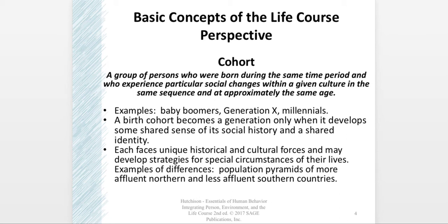There's a difference between a cohort and a generation: it becomes a generation only when it develops a shared sense of its social history and a shared identity. Generally when we talk about generations we're thinking in terms of about 20 years — people born 20 years apart — though in many places around the world that generation would be more like 30 years. A generation is not necessarily defined by an amount of time as much as it is a cohort that can look back and say they shared certain things.